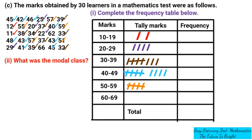Now we go to numbers between 60 and 69. The first, second, and fourth columns have none. In the third column we have 62 — I tick it and put a tally. In the fifth column we have 66 — I tick it and put a tally. I've now finished putting all the tallies.